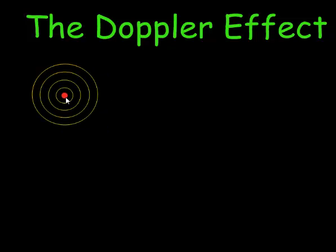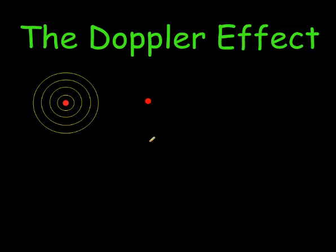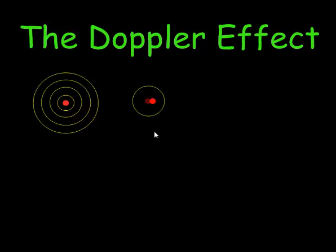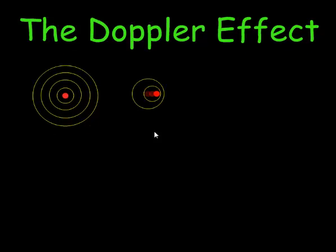Now let's imagine that the source is moving. Here is the source of our sound. At this very moment it is emitting a sound. It is going to travel to the east. After one second, the sound wave emitted right now will be here. But because the object is in motion, it will have moved here, and at this moment it releases its second sound wave. One second later, our first sound wave will be here and our second sound wave will be more or less around here.